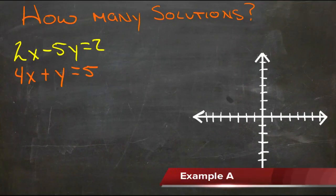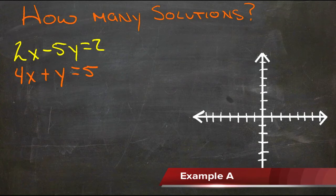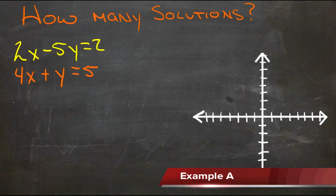To identify the number of solutions possible in a system of equations, the easiest thing to do is first write both equations in y equals mx plus b form. Then I'll show you how we can identify the number of solutions by taking a look at the slope and the y-intercept.